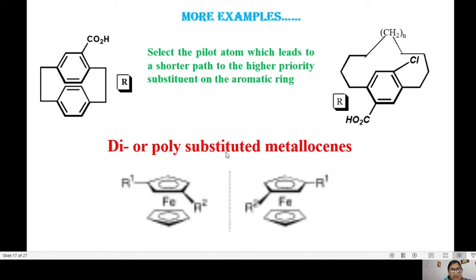Another example is di- or polysubstituted metallocenes. This molecule is called ferrocene where you have an iron sandwiched between two cyclopentadienes. When you have substituents here the symmetry is lost and you have planar chirality.